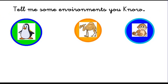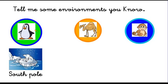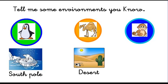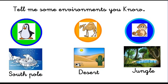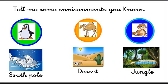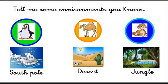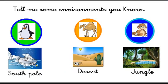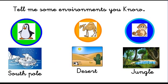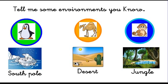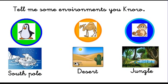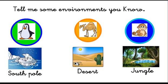Remember where the penguin lives? Yes, it lives in the South Pole. And where does the camel live? Yes, in the desert. What about the monkey? In the jungle. These three environments are very different. In the South Pole we don't see plants — it is very cold. In the desert there are very few plants and animals because there is very little water and it is very hot. In the jungle there are lots of trees, lots of water, and lots of animals.